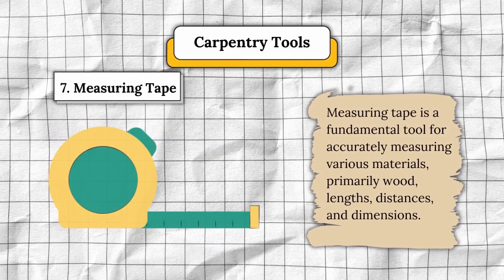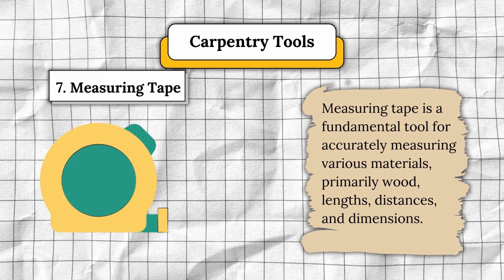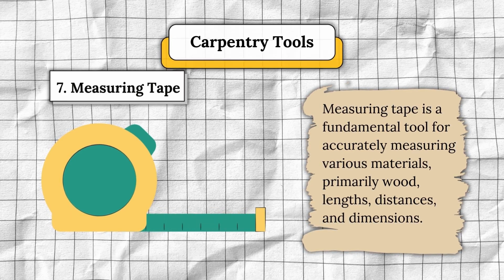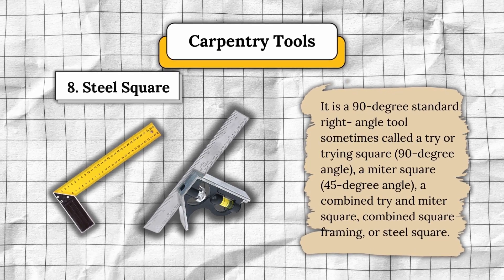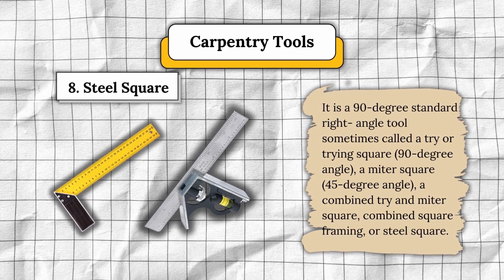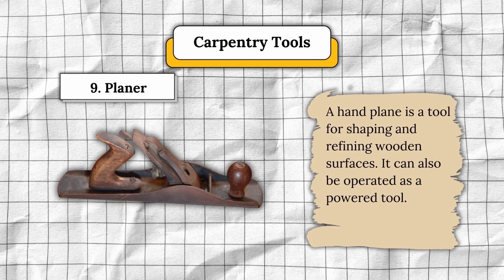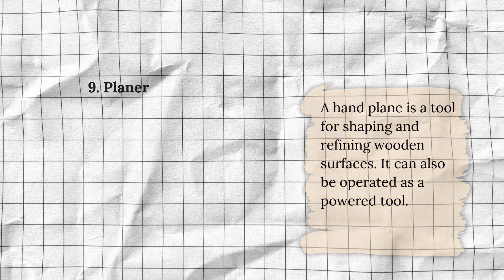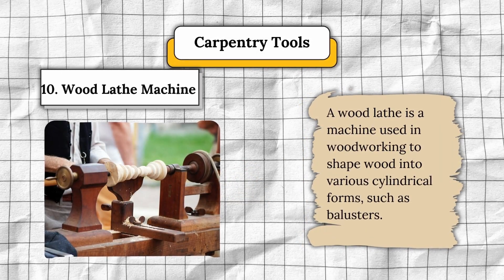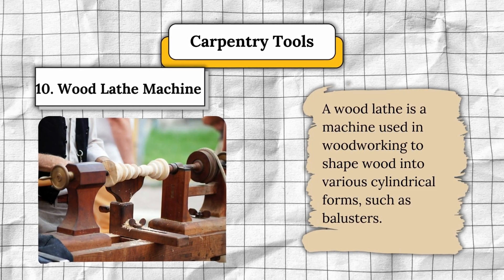Number seven, measuring tape — a fundamental tool for accurately measuring various materials, primarily wood, lengths, distances, and dimensions. Number eight, steel square — a 90-degree standard right-angle tool; also includes miter square (45-degree), combined tri- and miter square, and framing or steel square. Number nine, planer — a hand plane for shaping and refining wooden surfaces; can also be operated as a powered tool. Number ten, wood lathe machine — used in woodworking to shape wood into various cylindrical forms, such as balusters.